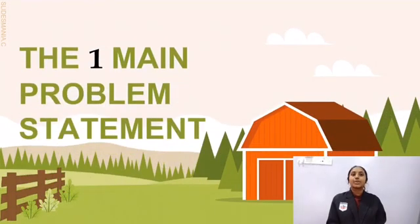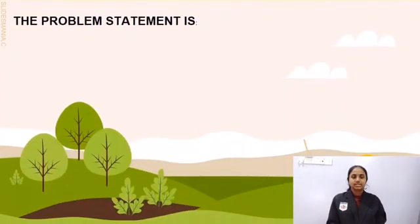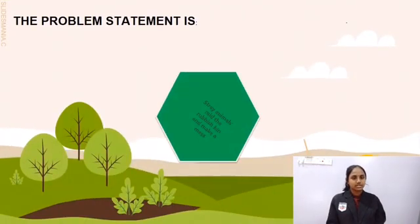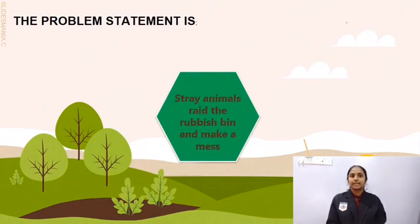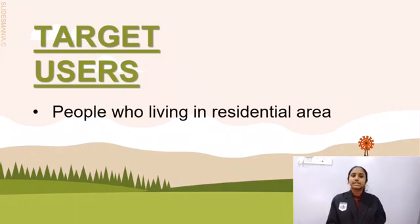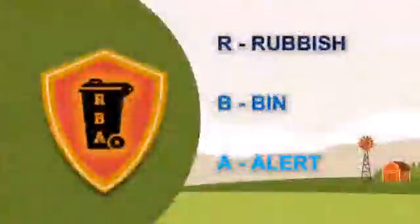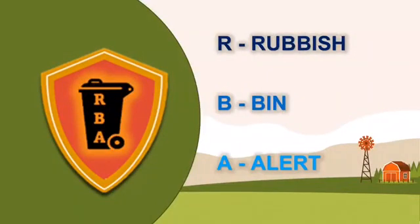For our project, we have one main problem statement. The problem statement is: stray animals raid the rubbish bin and make a mess. The target users of our project are people who are living in residential areas and public places. Therefore, we created the Rubbish Bin Alert, called RBA, as a solution for this problem.